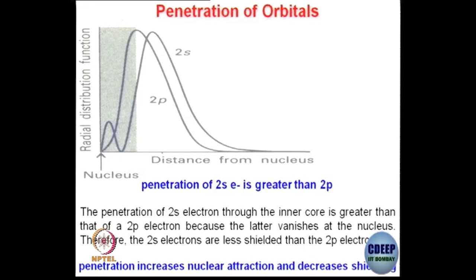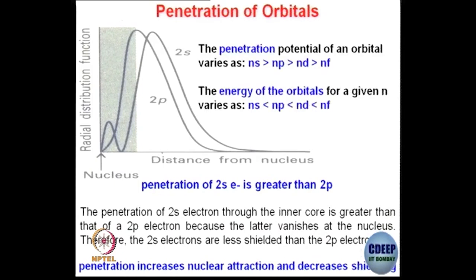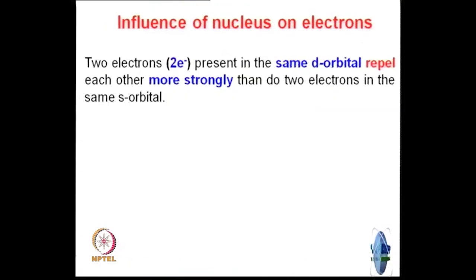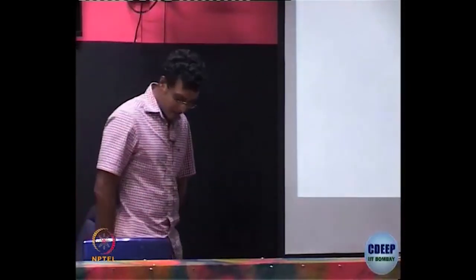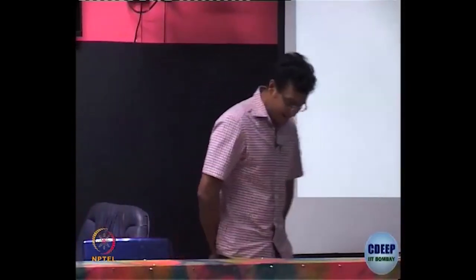2s electrons are basically penetrating much more compared to 2p electrons. Now, another thing you really need to understand is that d electrons repel each other much more compared to p or s electrons. It is like involvement — how much involved you are in a particular thing.